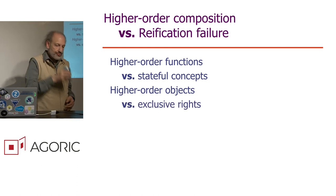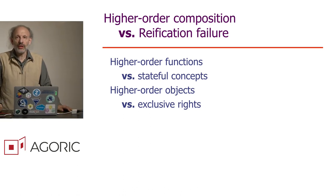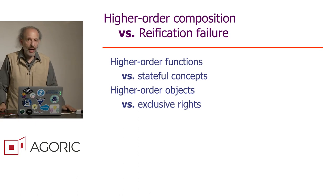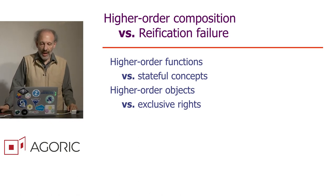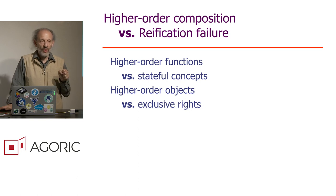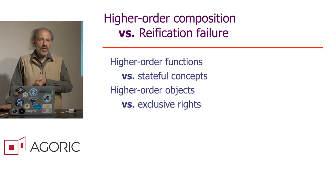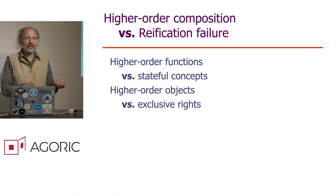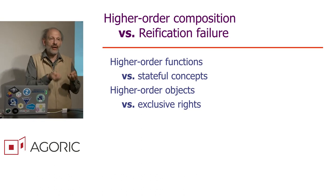However, what is directly relevant to our mission of trying to bring the world economy online through blockchains and smart contracts is that objects themselves cannot directly represent exclusive rights. You can create patterns of objects by which you indirectly create the concept of exclusive rights and indirectly manipulate them, but the exclusive right itself is not reified as an object.